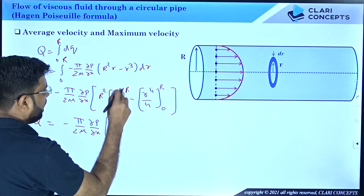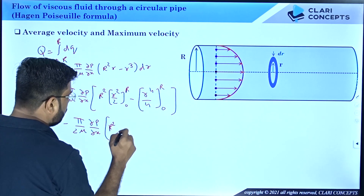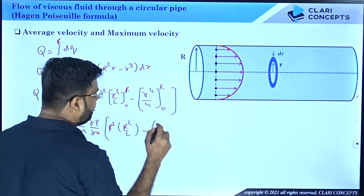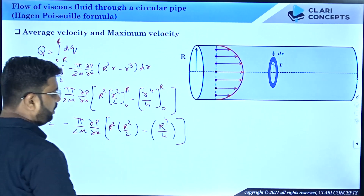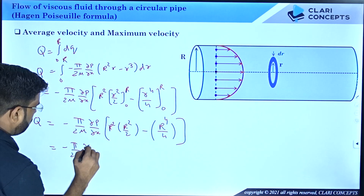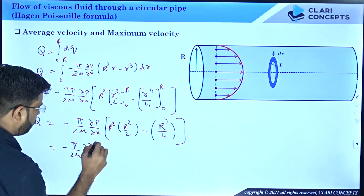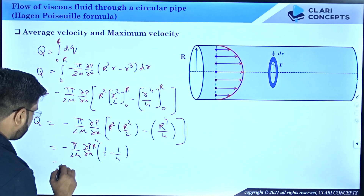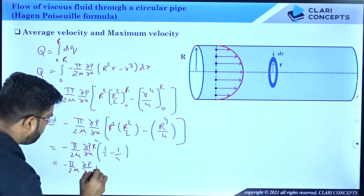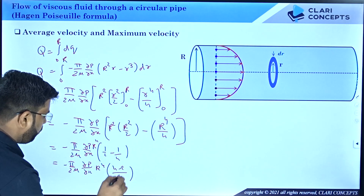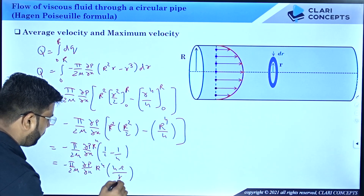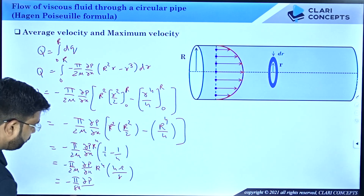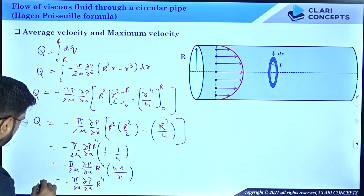Substituting limits: the result is R⁴/2 − R⁴/4. Putting R⁴ as a common factor: R⁴(1/2 − 1/4) = R⁴ × (2−1)/4 = R⁴/4. So the expression becomes Q = −(π/2μ)(∂P/∂x) × (R⁴/2 − R⁴/4). Simplifying: 1/2 − 1/4 = 2/8 = 1/4. Therefore Q = −(π/8μ)(∂P/∂x) × R⁴. This is the total flow rate.